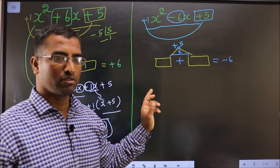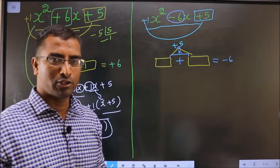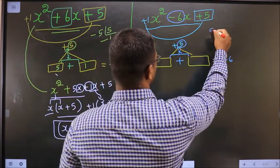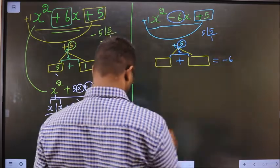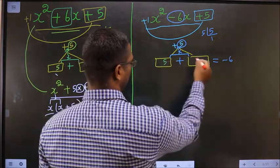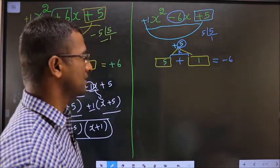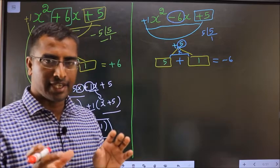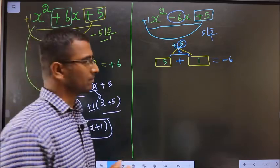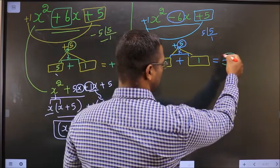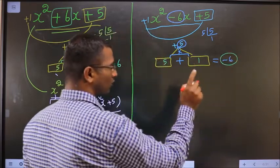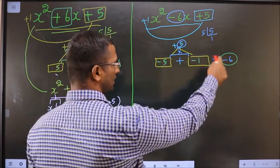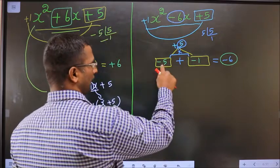And when you multiply those two numbers you should get plus 5. Find two numbers such that when you add you get minus 6 and when you multiply you get plus 5. By taking the LCM of 5, the two numbers are 5 and 1, since 5 plus 1 is 6 and 5 into 1 is 5. Now adjust the signs: to get minus 6, place minus on both — minus 5 minus 1 is minus 6, and minus 5 into minus 1 is plus 5.